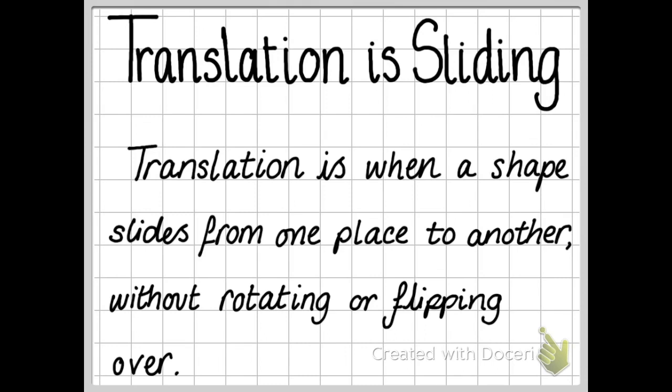So what is translation? Translation is a maths word for sliding. Translation is when a shape slides from one place to another without rotating or flipping over.